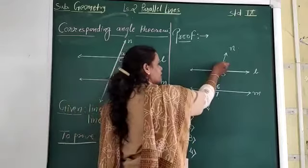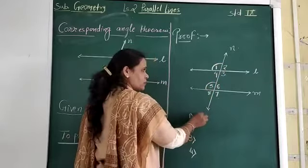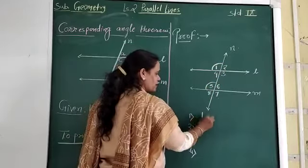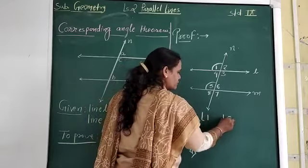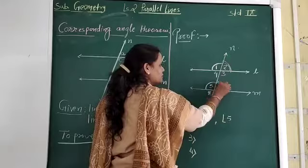So here if you see angle 1 and angle 5, means your first pair if you want to write, it is angle 1 and angle 5. We can see another pair, angle 2 and angle 6.